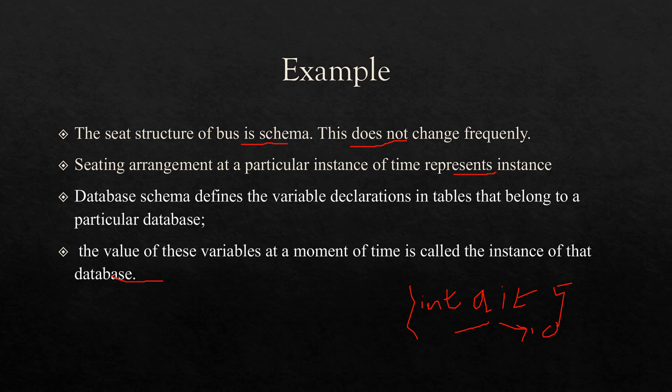Database schema defines the variable declarations — similar to this, the schema is just a declaration that changes rarely. But the value of the variables at a moment of time is called the instance of that database. For example, the variable a stores the value 5 at a particular time — that is the first instance. At another time it stores the value 10 — that is a different instance.